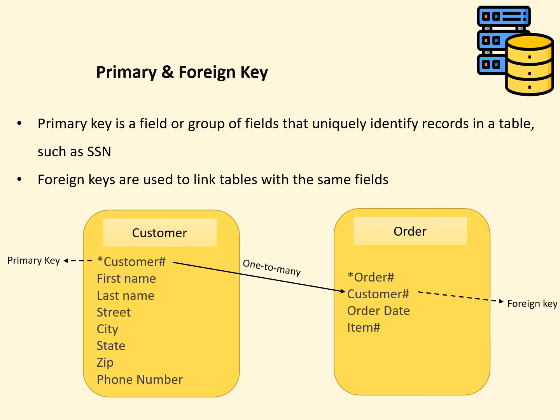Foreign keys are used to link tables with the same fields. For example, each customer can make several orders at the store, so there is a one-to-many relationship between the customer table and the order table. In this relationship, the customer table is the parent table and the order table is the child table. The linking field in the parent table is the primary key, and the linking field in the child table is the foreign key. The field acting as the foreign key must have a corresponding value in the parent table.